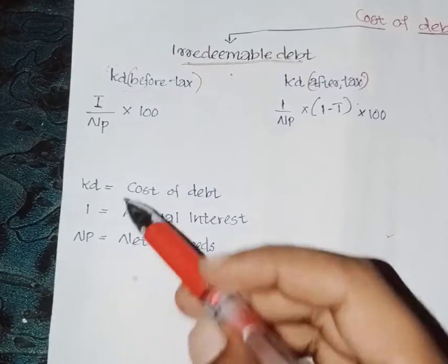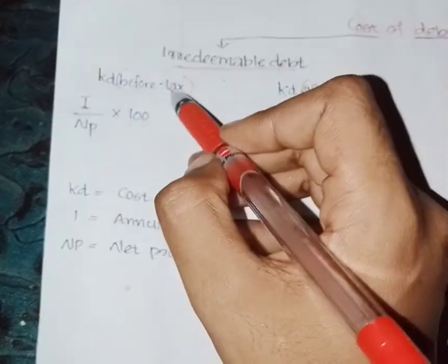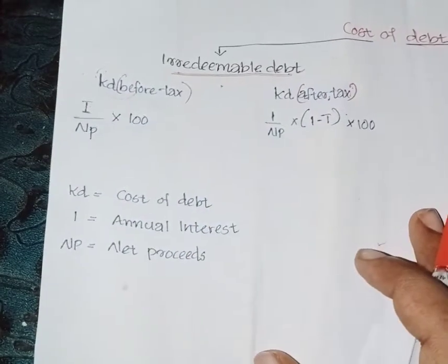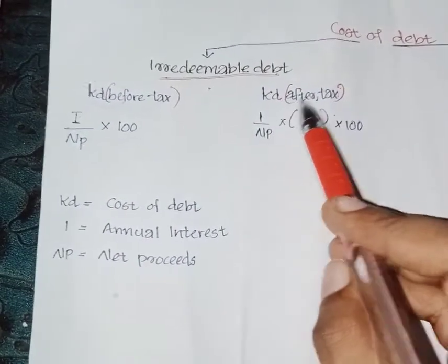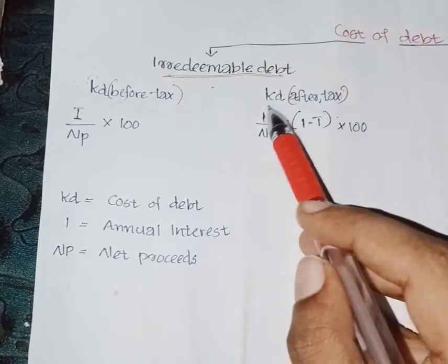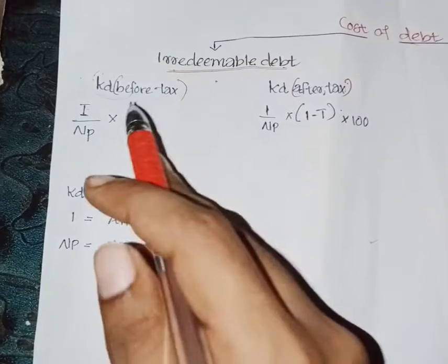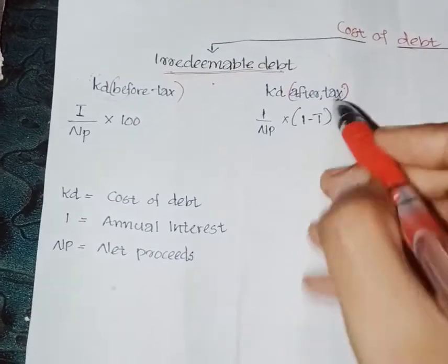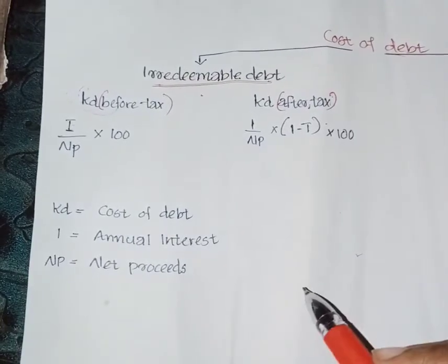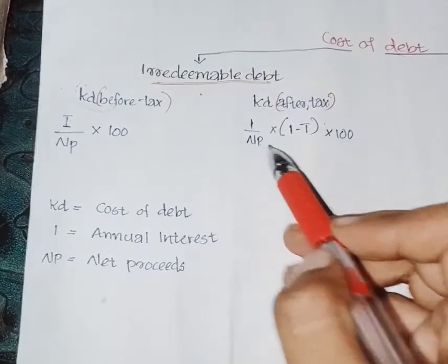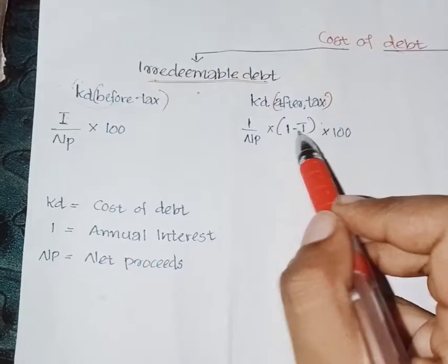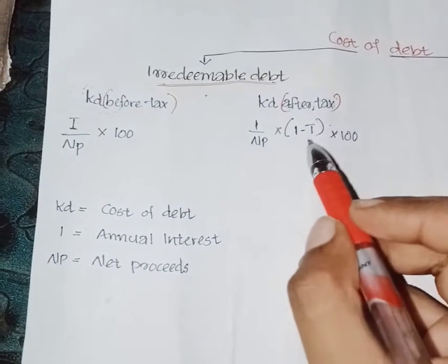Let's discuss the equation for cost of debt after tax. The equation is: I divided by NP into 100, with a 1-t adjustment. The addition of 1-t makes it the after-tax cost of debt. The full equation is I divided by NP into (1-t) into 100, where I is interest and t is the tax rate.